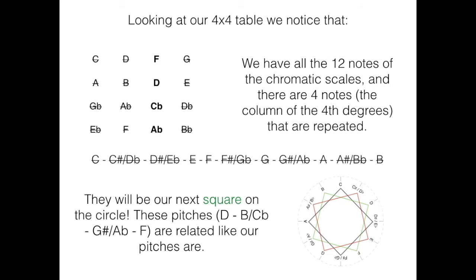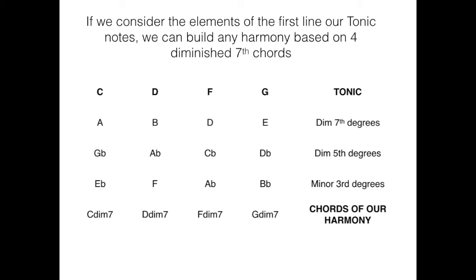Looking at a 4x4 table, we notice that we have all the 12 notes of the chromatic scale, and there are 4 notes, the column of the 4th degrees, that are repeated. They will be our next square on the circle. These pitches are related like our pitches are. If we consider the elements of the first line our tonic notes, we can build any harmony based on 4 diminished 7th chords: C diminished 7th, D diminished 7th, F diminished 7th, and G diminished 7th. These will be the chords of our harmony.